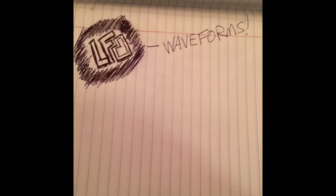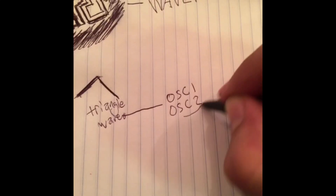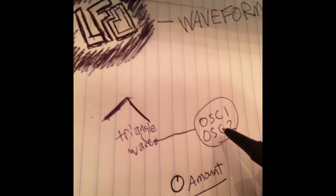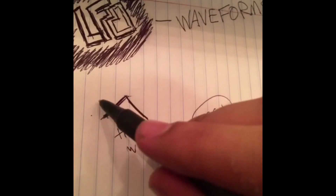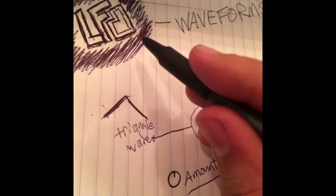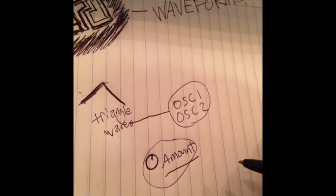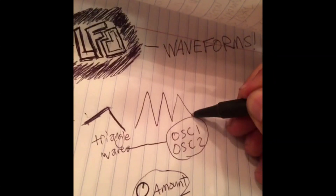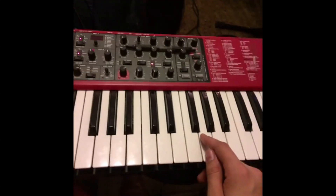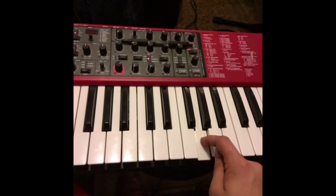LFO waveforms: if we have a triangle wave and we routed it to the pitch of oscillators one and two, the pitch of the oscillators will go up and down like the power cycles of the LFO, and the amount will control the amplitude of that wave. In other words, the amount controls how wide the vibrato is.